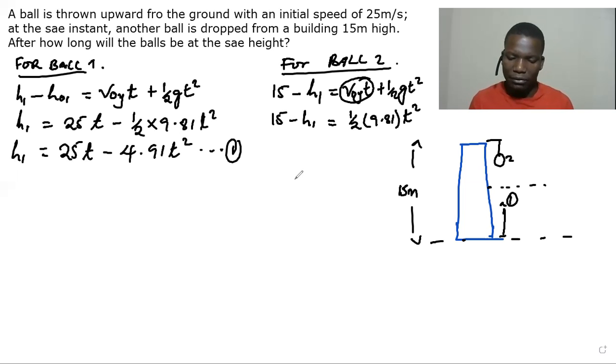So we have 15 minus h1 equal to half gt squared. So what we're going to have is h1 being equal to 15 minus 4.91 t squared. So we are going to have that as our equation two.